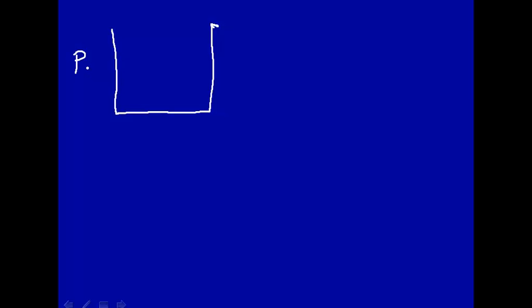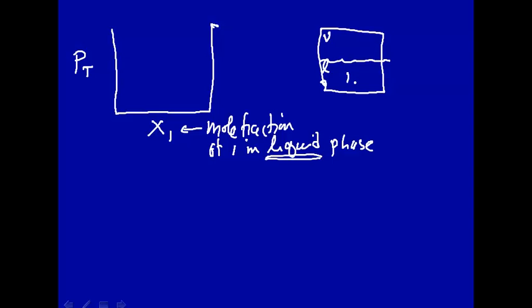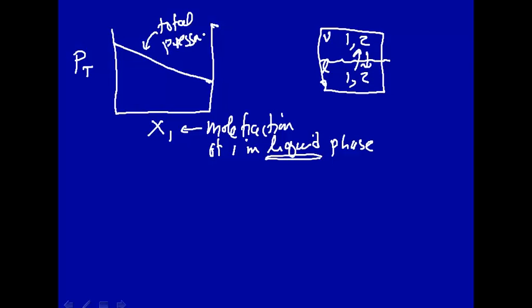In the previous part of the lecture, we had a graph showing the total pressure as a function of mole fraction, using the symbol x as the mole fraction of component 1 in the liquid phase. The system has a liquid and a vapor with two components in dynamic equilibrium. If you change the mole fraction of component 1 in the liquid, you change the amount in the vapor, which changes the total pressure. Raoult's law says that for an ideal solution, total pressure is a linear function of the mole fraction in the liquid phase.